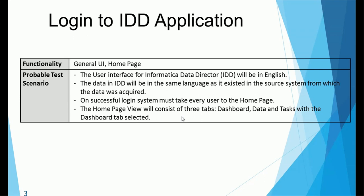As a tester, first of all we have to check whether we have proper access to the IDD application. The URL will be provided by the MDM administrator. We have to use that URL and try to access it in a browser. There are specific versions of browsers required, so make sure you are using the correct version. You can check with the MDM admin or the development team about which browser versions are needed to access the IDD application.